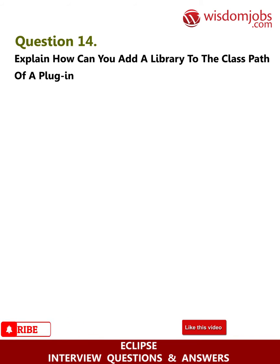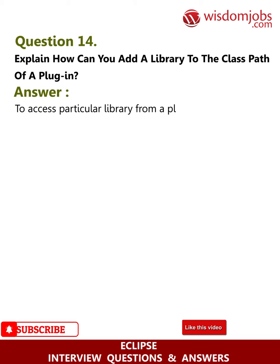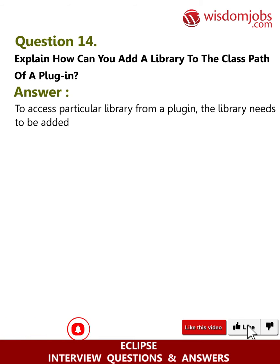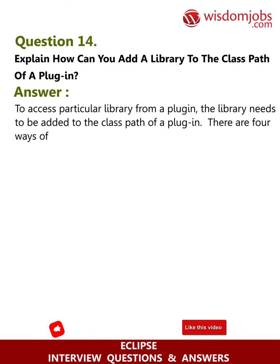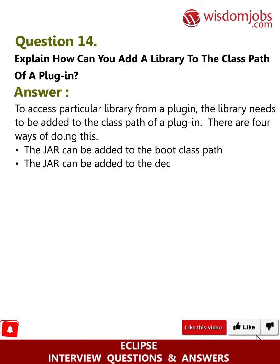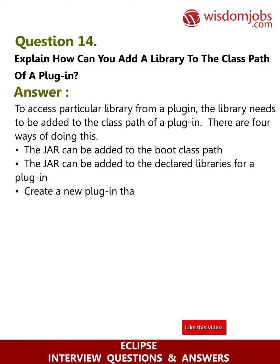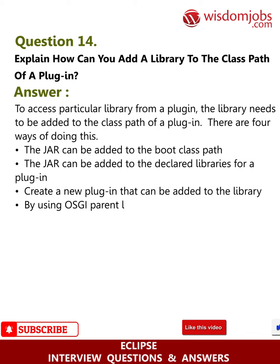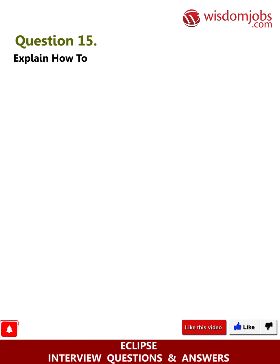Question 14: Explain how can you add a library to the class path of a plugin. Answer: To access a particular library from a plugin, the library needs to be added to the class path of a plugin. There are four ways of doing this: the JAR can be added to the boot class path, the JAR can be added to the declared libraries for a plugin, or create a new plugin that can be added to the library by using the OSGi parent loader.